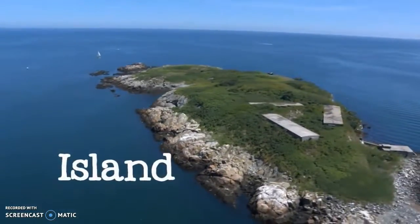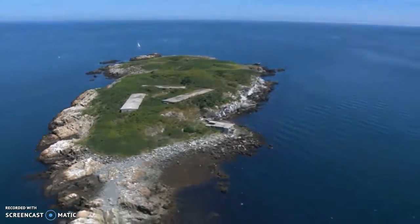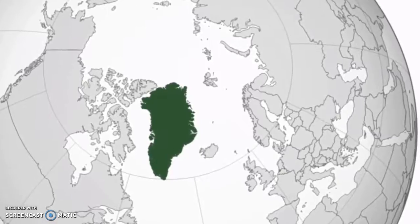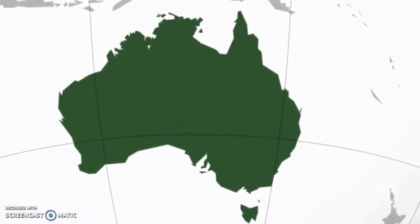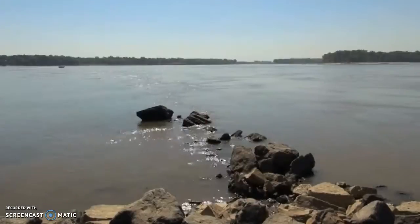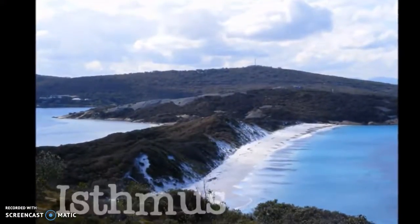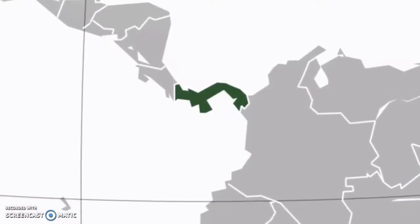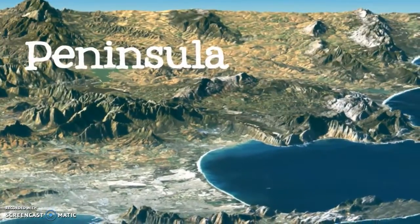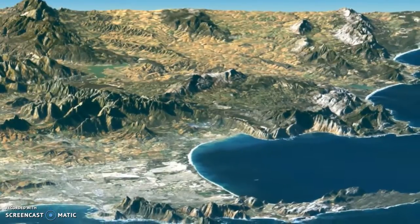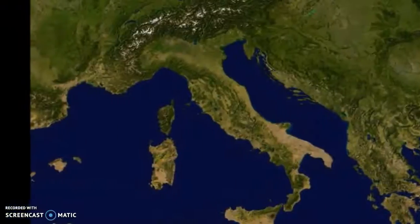An island is a piece of ground completely surrounded by water. Islands can be big or small in any part of the world. The biggest island in the world is Greenland. Australia is bigger than Greenland, but it is so big that it is called a continent instead of an island. Two more landforms involving a little land and a lot of water are peninsulas and isthmuses. An isthmus is a narrow strip of land with water on both sides connecting two larger pieces of land. A famous example is the Isthmus of Panama connecting North America to South America. A peninsula is a piece of land that has water on three sides but is connected on the fourth to the mainland.